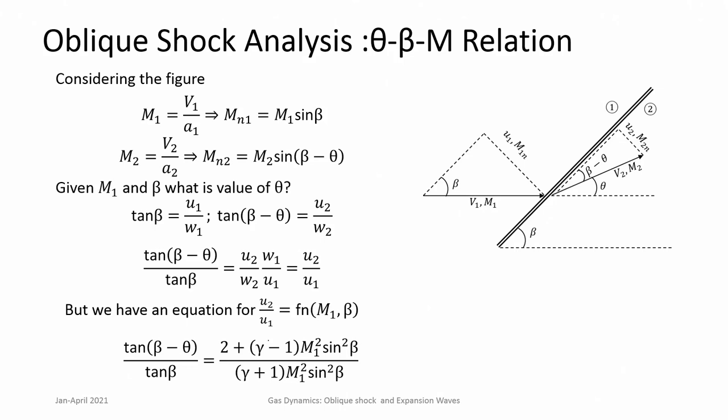All flow variables are now expressed in terms of Mach number, beta, and theta, but we still need the relationship between these three quantities. Unlike the normal shock where knowing M₁ gives everything, in an oblique shock besides M₁ you need to know either the shock wave angle beta or the deflection angle theta.